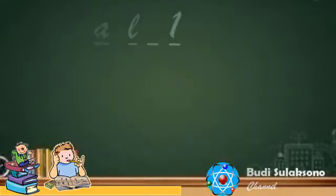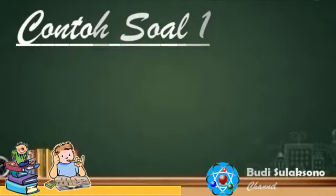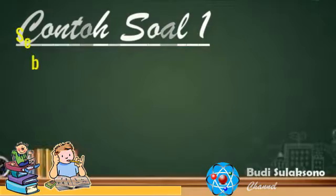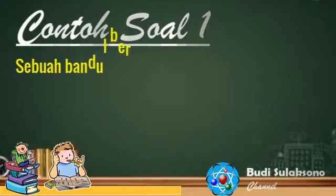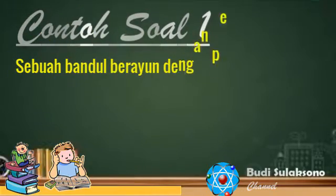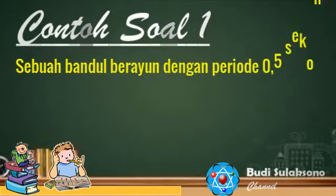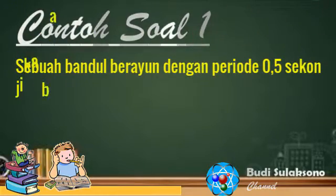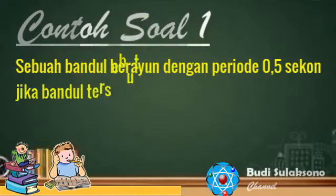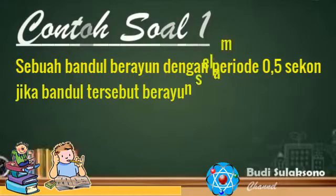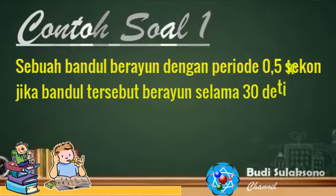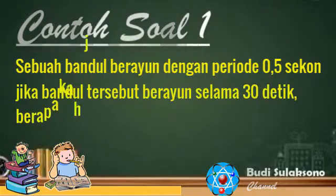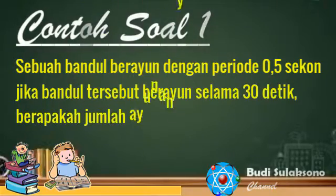Contoh soal 1. Sebuah bandul berayun dengan periode 0,5 sekon. Jika bandul tersebut berayun selama 30 detik, berapakah jumlah ayunan yang terjadi?